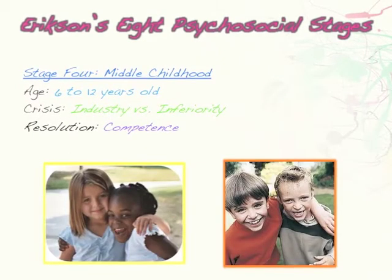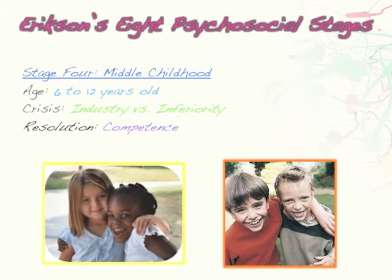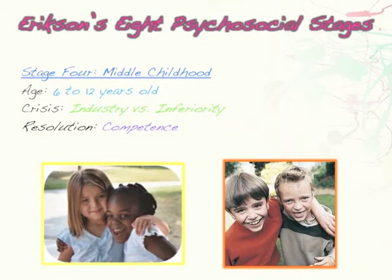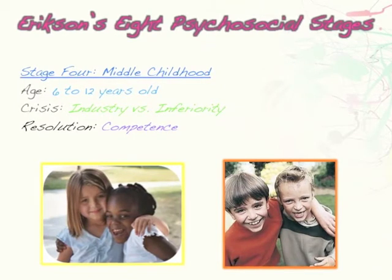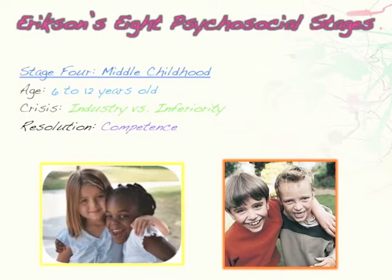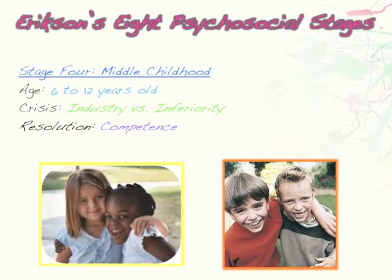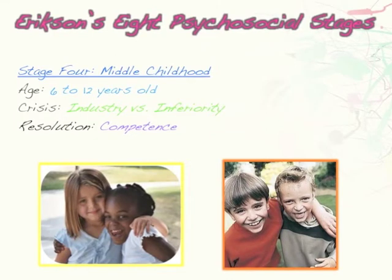Erikson believed the first six years of our lives have the biggest influence on our development and on shaping who we become as adults. However, he did say it's possible to reverse what we learned in those first six years through self-observation, self-awareness, and working on ourselves later in life.